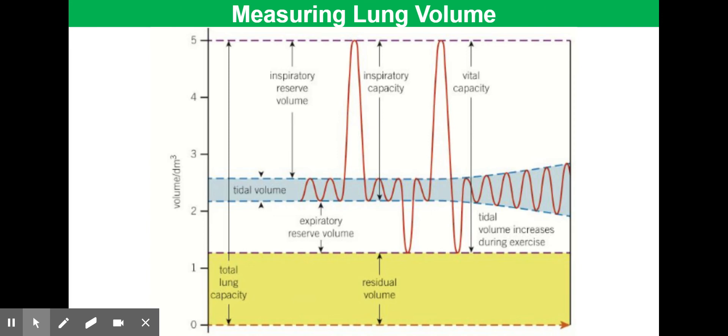Also labelled on the spirometer trace is tidal volume, that's in the blue band in the middle. Tidal volume is the volume of air moved in and out with each breath, kind of like the normal resting breath volume. Typical tidal volume at rest might be 0.5 decimetre cubed. That's usually the amount that's sufficient to supply all the oxygen that's required by your body at rest.